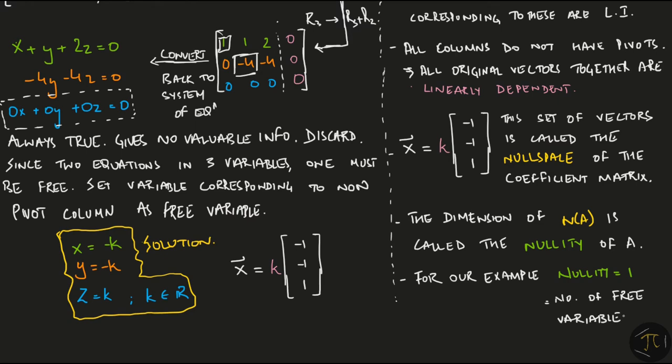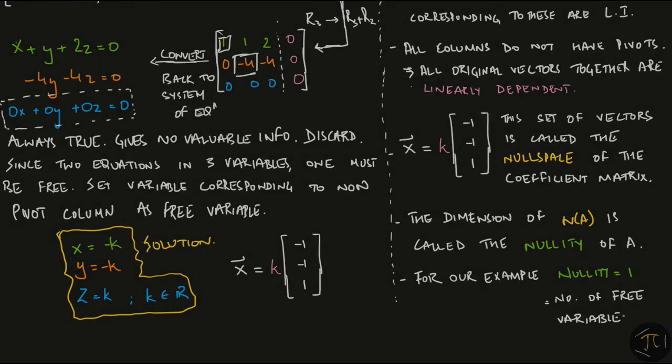So, to sum this part up, a homogenous system has all constants as zeros. It always has at least one solution that is when all the variables are equal to zero. A set of vectors is linearly independent if in the echelon form of the matrix, there is a pivot in each and every column. The set of solutions for a homogenous system is called its null space and its dimension is equal to the number of non-pivot columns.